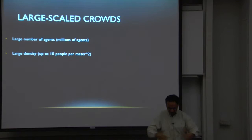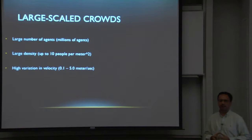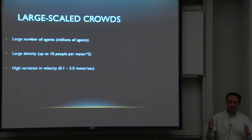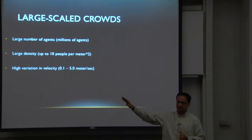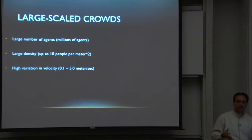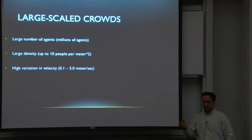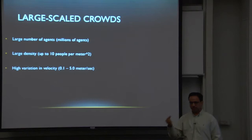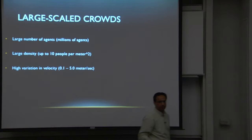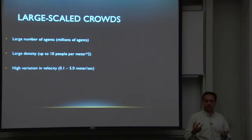One of our focuses is large-scale crowd simulation. The two things we care most about beyond raw numbers are density and velocity. I'll show videos where density reaches close to eight or nine people per square meter — that's one meter by one meter with eight people. Typical human speed ranges from 0.1 to 5 meters per second. Studies show most adult males walk at an average of 1.3 meters per second. The velocity is a big range: very dense crowds move very slowly; open crowds move at about 1.3 m/s. The two key things determining crowd behavior are density and velocity.